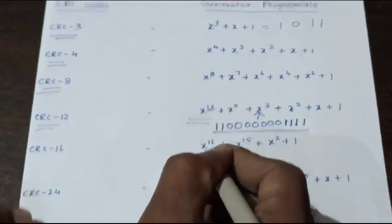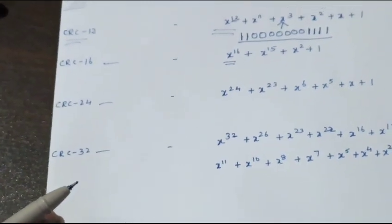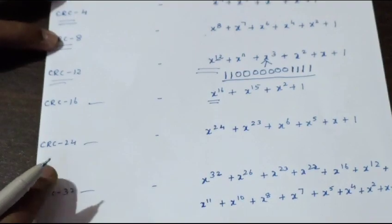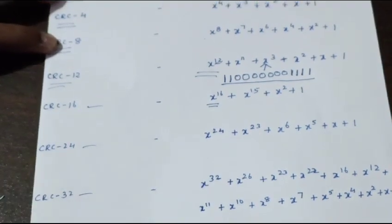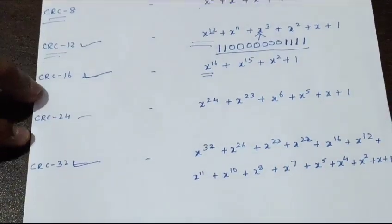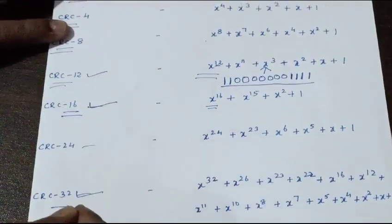Similarly you can do for CRC-16, CRC-24, and CRC-32. We also have CRC-64. Among these, in most applications we are using CRC-3, CRC-8, CRC-16, and CRC-32. If you go for higher CRCs like CRC-16 and CRC-32, we have one or two additional standard polynomials.